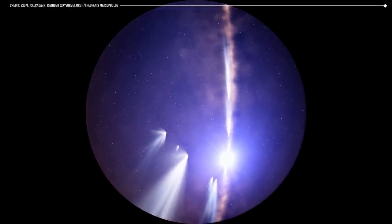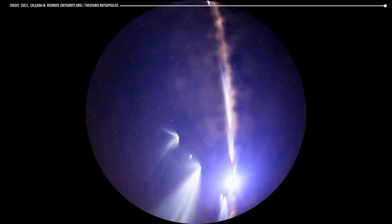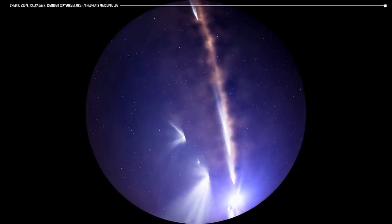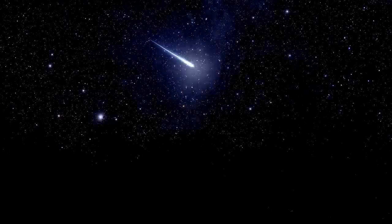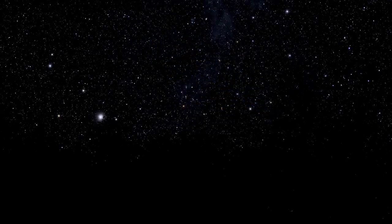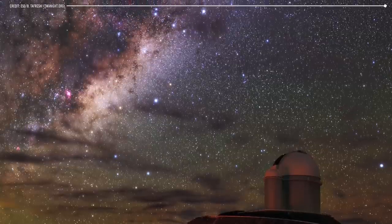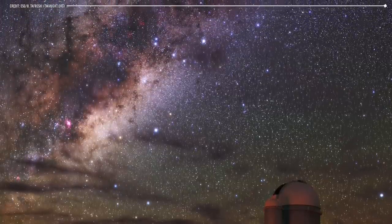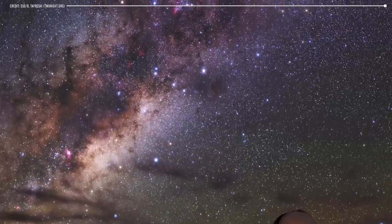Barnard's discovery of Barnard's star was notable because it had a very high proper motion, which meant it was moving quickly across the sky. This made it difficult to detect and observe, but Barnard was able to use his expertise in astronomical photography to find it.